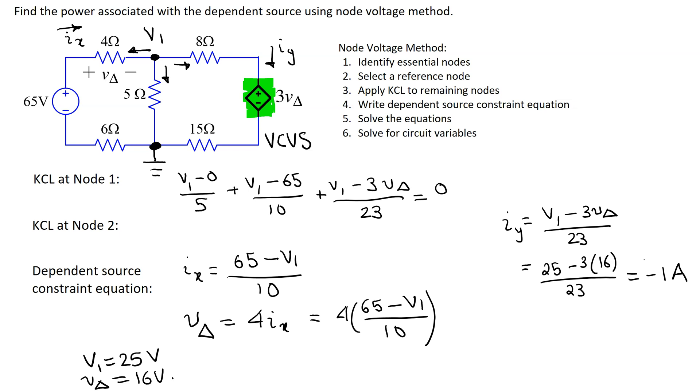Now, the power associated with the voltage controlled voltage source is given by the product of the voltage and the current. So this is 3 V delta the voltage times the current IY and we need to use the passive sign convention to decide the sign of the power calculation.